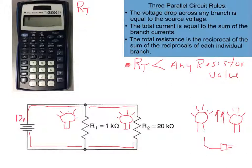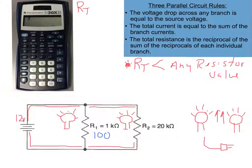One very important way to think about total resistance in a parallel circuit: resistance total is always less than any individual resistor value. That's your double-check when you're done. Also remember what 'k' means — it means multiplying by 1000. So 1k equals 1000 ohms, and 20k equals 20,000 ohms.